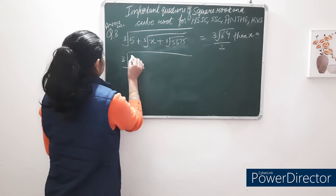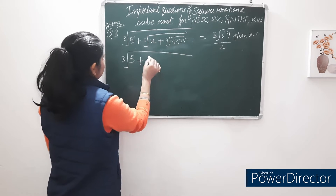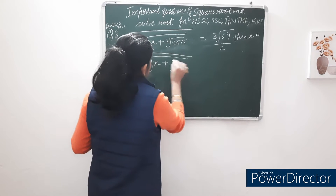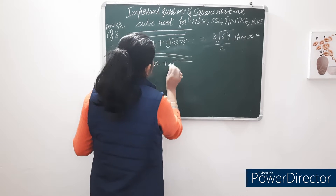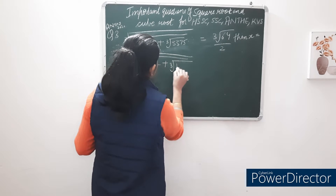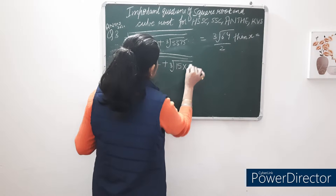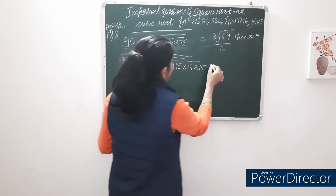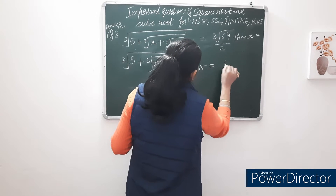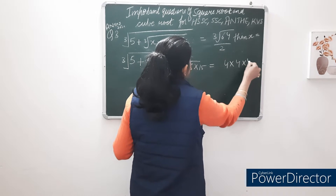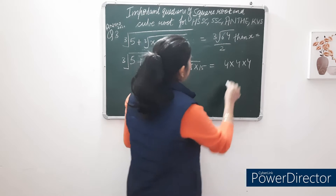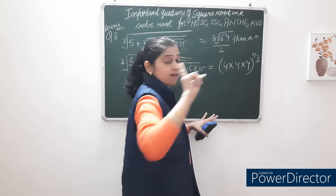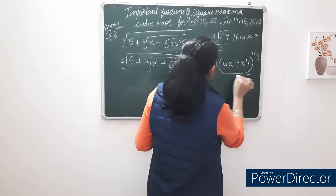Cube root of 5 + cube root of x + cube root of 3375 = cube root of 64 / 2. Now, 3×3×7×5 = 3375, and 15³ = 3375. Also, 4³ = 64. Cube root means power 1/3. So cube root of 64 = 4, and dividing by 2 gives 2.